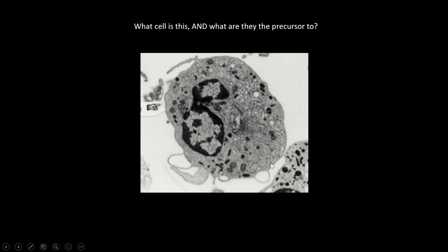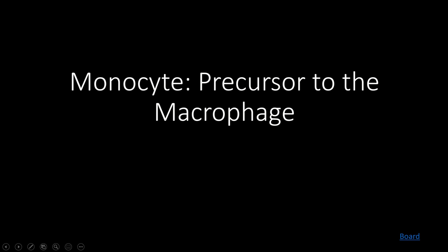What cell is this, and what are they a precursor to? On the cell membrane you can appreciate little arm-like projections branching off — that is very characteristic of the monocyte. Monocytes are precursors to macrophages — our phagocytic cells. In order to phagocytize things, they need to branch out and grab things, so they have prominent arm-like projections on their cell membrane to help them grab things.